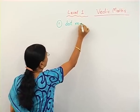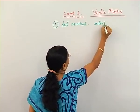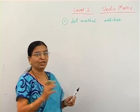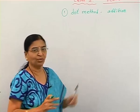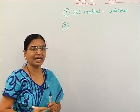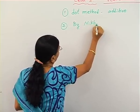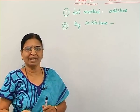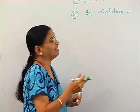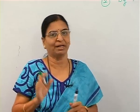We learned about the dot method, which is about addition. When 10 or more numbers are there, to avoid the carryover we use the dot method. Secondly, for Nikhilam — we want to find out what Nikhilam means. We can write the complement of a given number from a given base, which is useful in Nikhilam subtraction, division, and multiplication.